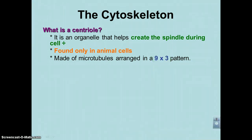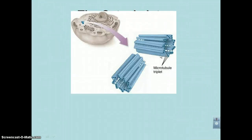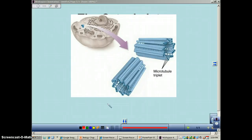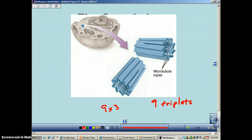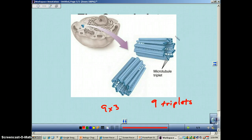The centriole has a nine-by-three arrangement, meaning there are nine triplets of microtubules. If you count them up, there'll be nine of them, and these guys often show up perpendicular to each other. You can see this in the picture. If you were to make a 3D cell model, I always envision these as two twizzlers that were perpendicular to each other. Remember, centrioles are going to make the mitotic spindle — mitotic referring to mitosis — so when we get into chapter 10, we're going to come back to these.